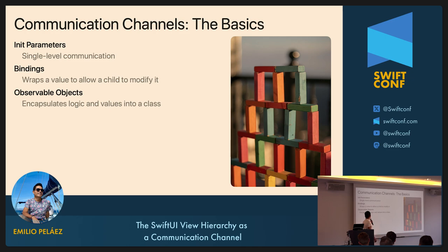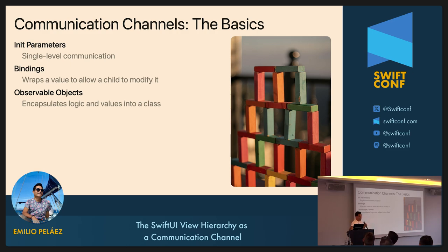Then we have observable objects. You basically have a class that encapsulates logic and values, you put that into your view, and any updates it makes are reflected in the view. You have to be a bit careful, because any change that happens to your observable object is going to trigger a re-evaluation of your view, even if that value itself is not being observed. That was fixed with the new Observation framework on iOS 17. Classes also have a more straightforward lifecycle, are more testable, and observable objects are really one of the main things we use in SwiftUI.